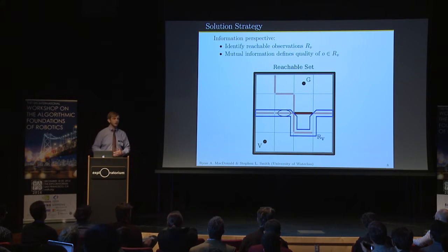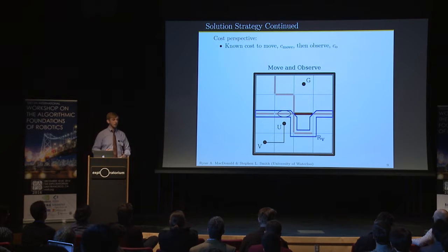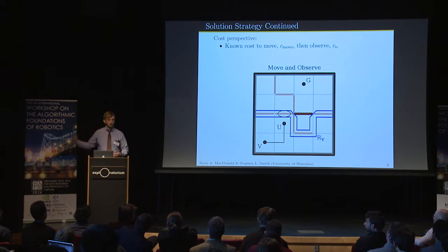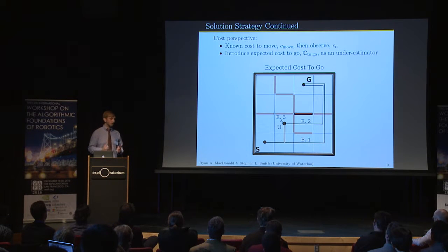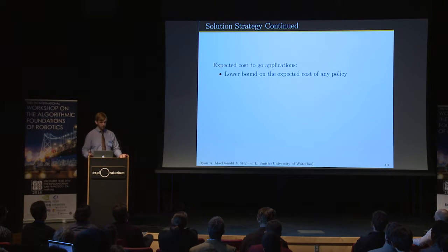We also have to consider cost. For a given observation, there's the cost to move to it and the cost to make it. But you can quickly imagine cases where this diverges the robot away from the goal. So we introduce the notion of expected cost to go, used as an underestimator of the expected cost from a current position to the goal. We use it in two ways: to lower bound the expected cost of any policy, and — perhaps more importantly — to rule out non-optimal observations via an observation pruning condition.